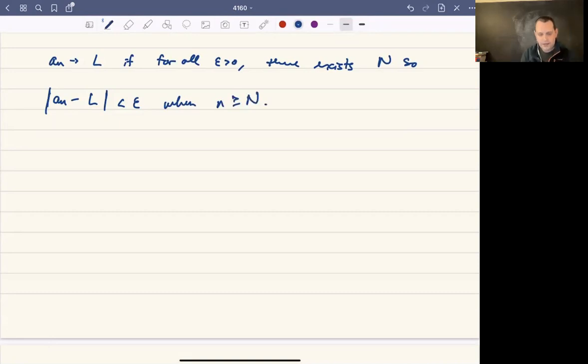That's the definition of the limit. I always want to call it the epsilon-delta definition even though there's no delta, but the epsilon-N definition, or maybe just the epsilon definition of a limit for a sequence. Remember that this is the same as the definition for functions going to infinity.